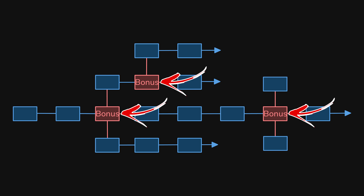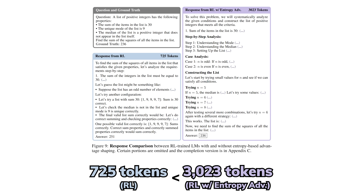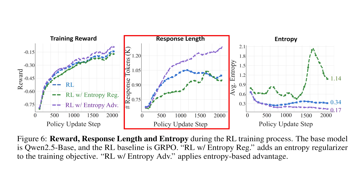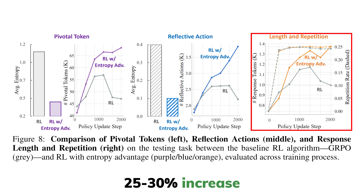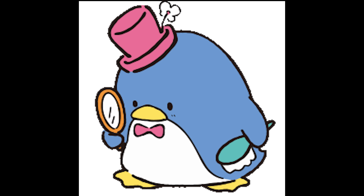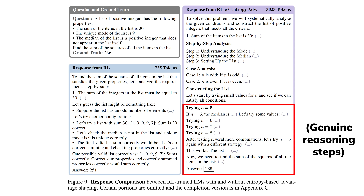By rewarding the model to explore all branches, it shows that the model now generates more distinct correct proofs instead of just repeating one favorite derivation. The chain-of-thought process is also longer and more complete — the average solution length grows by 25–30%, and manual inspection by the researchers confirmed that the extra steps are genuine intermediate reasoning, not filler, indicating the bonus reward keeps alternative branches alive long enough to find fuller solutions before entropy naturally collapses.